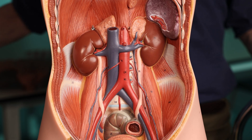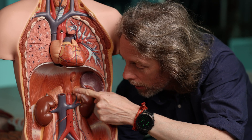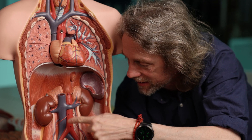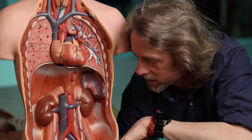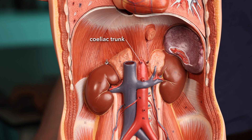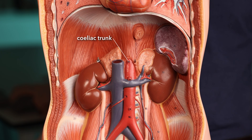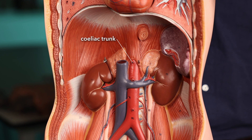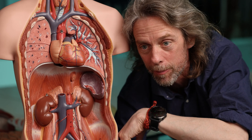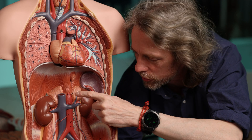That there is the median arcuate ligament. The aorta is passing through the diaphragm at about the T12 vertebral level. As soon as the aorta passes through the diaphragm and enters the abdomen, it gives off its first anterior branch. These three anterior branches supply blood to the gastrointestinal tract. This first branch, the celiac trunk, supplies blood to foregut-derived structures: the lower esophagus, stomach, spleen, pancreas, half the duodenum, liver, and gallbladder. The celiac trunk is right up against that median arcuate ligament.